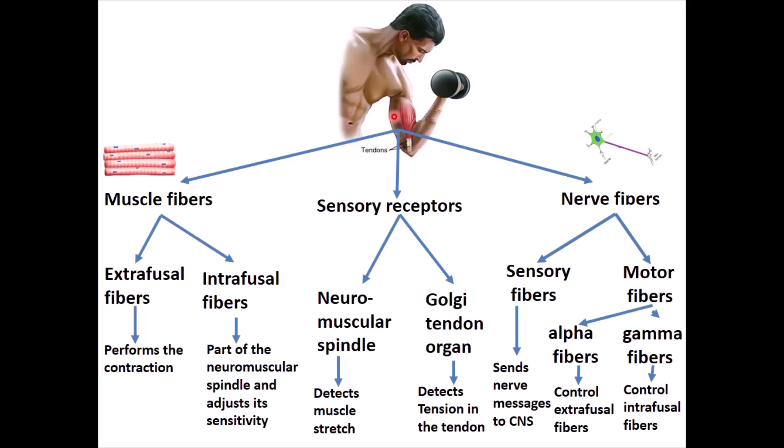So there you have it. This is the summary of the lesson. Muscles consist of, first of all, the muscle fibers, which include the extrafusal fibers which perform the contraction, and the intrafusal fibers that form part of the neuromuscular spindle and adjust its sensitivity. It contains sensory receptors, like the neuromuscular spindle which detects the muscle stretch or the muscle length, and the Golgi tendon organ which detects the tension inside the tendon. And finally, we have the nerve fibers. They include the sensory fibers which send messages to the CNS from these two guys here, the sensory receptors. And we have the motor fibers, the alpha motor fibers connected to the extrafusal and control their activity. And the gamma fibers would control the activity of the intrafusal fibers.